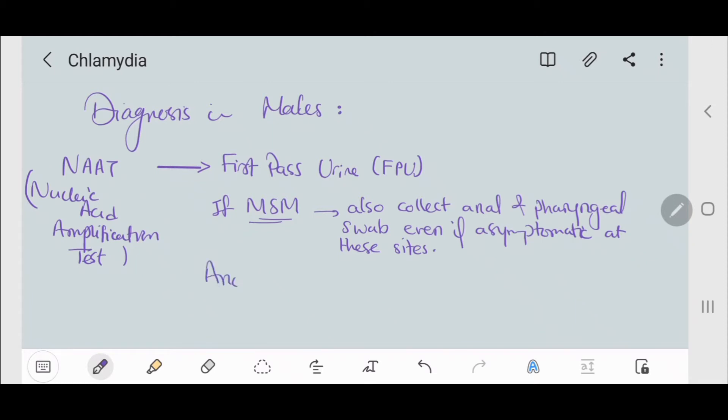The anorectal swabs could be done through self-collection if the patient is asymptomatic, or through proctoscope if the patient is symptomatic, or self-collection if the patient refuses doing it through the proctoscope.